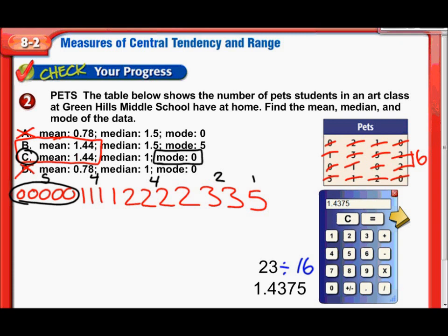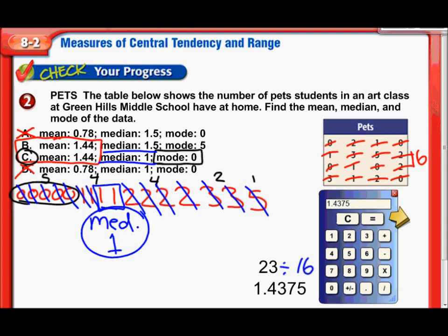So it looks like C is going to be our right answer. But let's just verify that the median is one. I start crossing off numbers from each end until I find the center. I have two numbers in the middle, they're both ones. So clearly the median is indeed one. And that matches our answer choice, C. C is definitely the right answer.